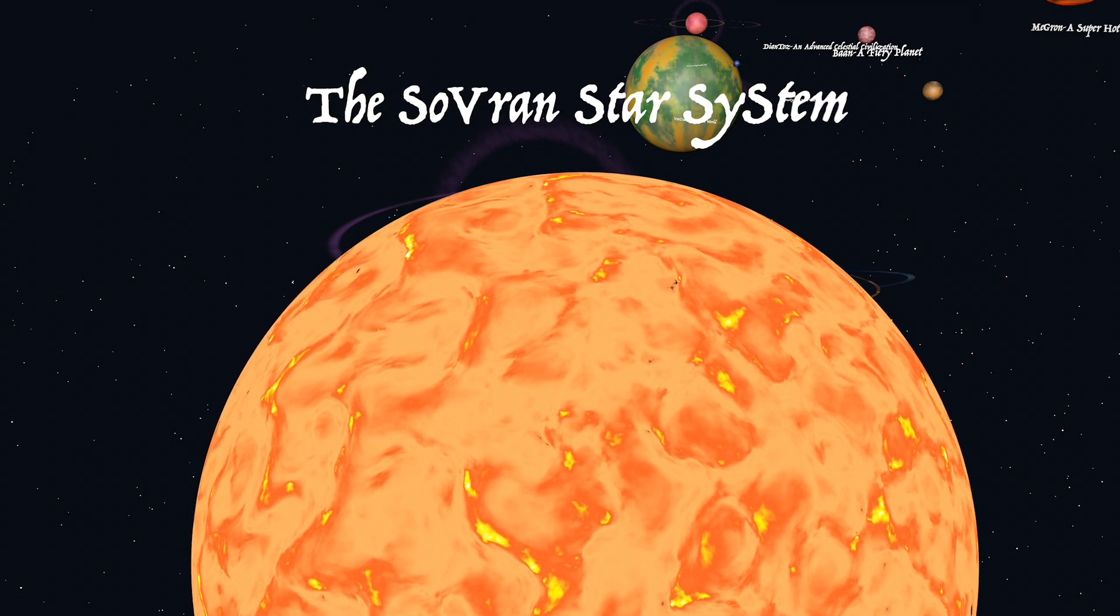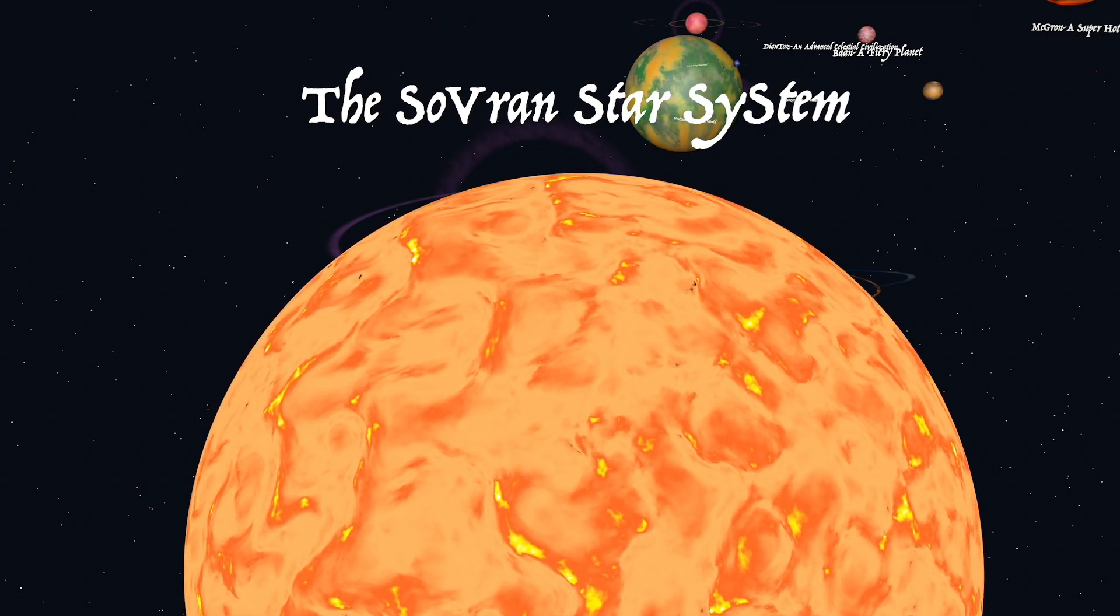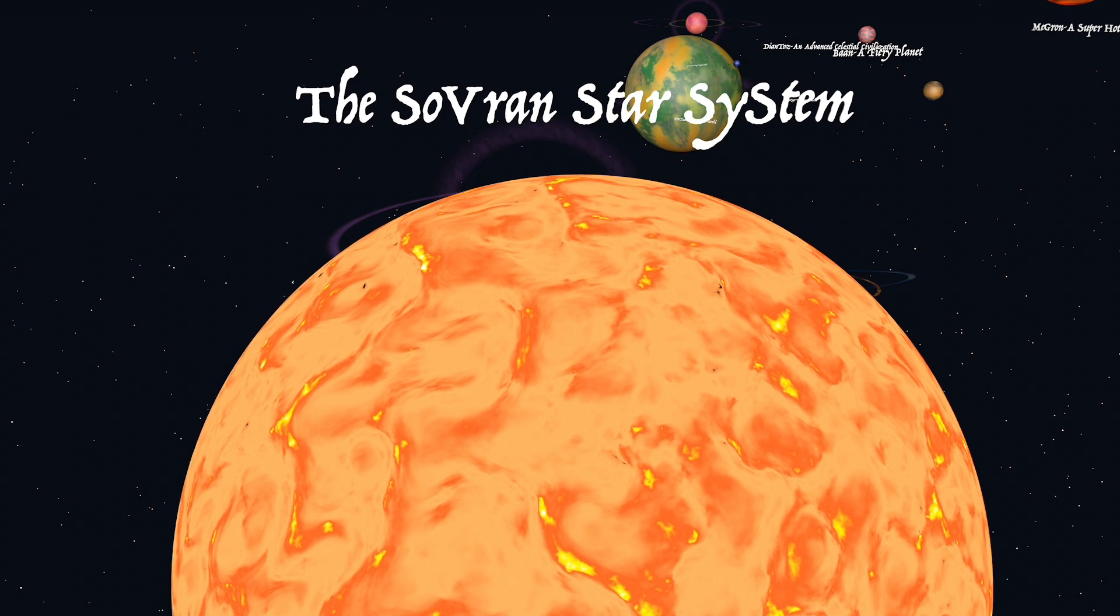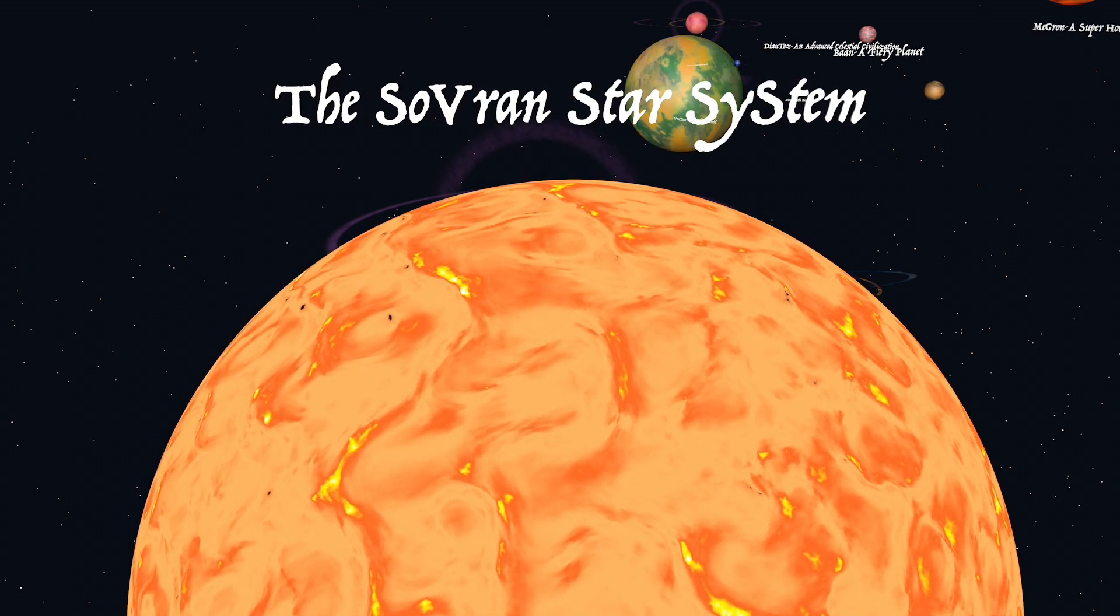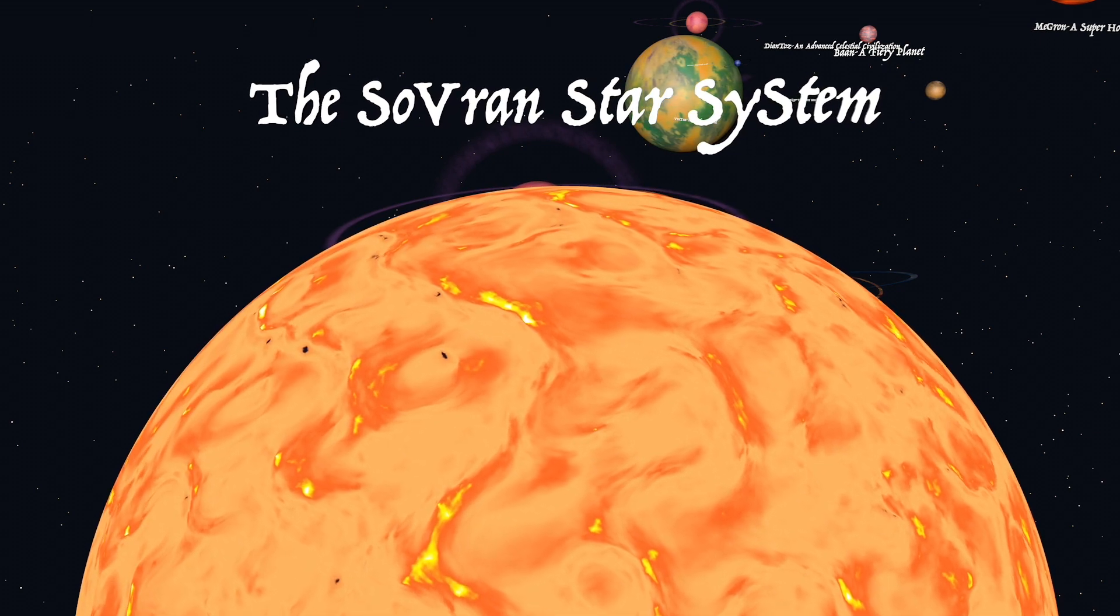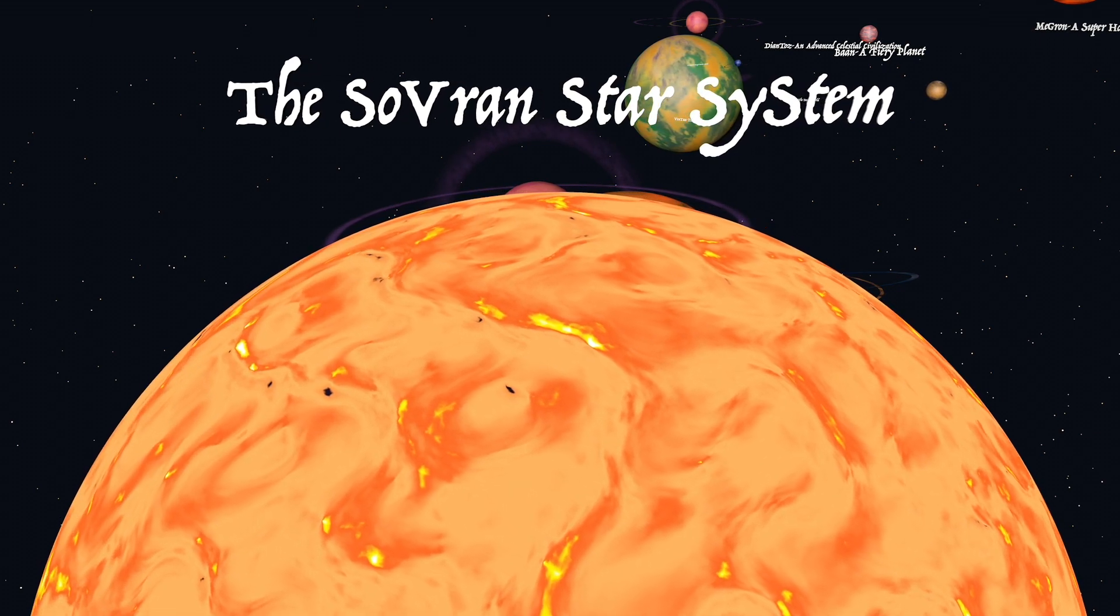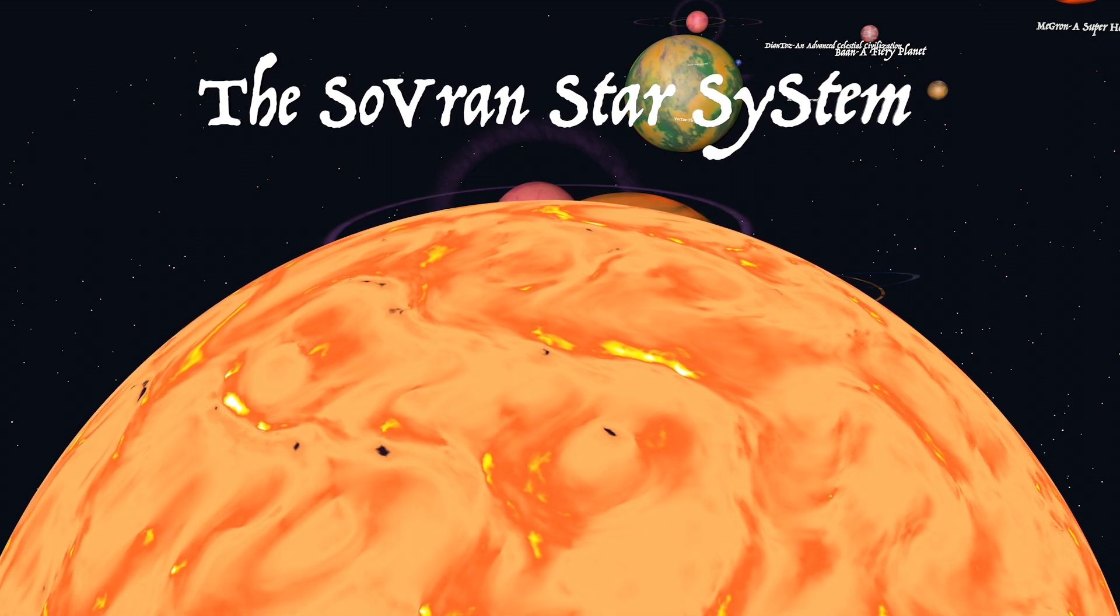Welcome to the Land of Diantas. The journey begins with the Sovran star system, which is located in the Pegasus star cluster. Our Sun is the first of three stars that reside in the Diantas tri-star system.